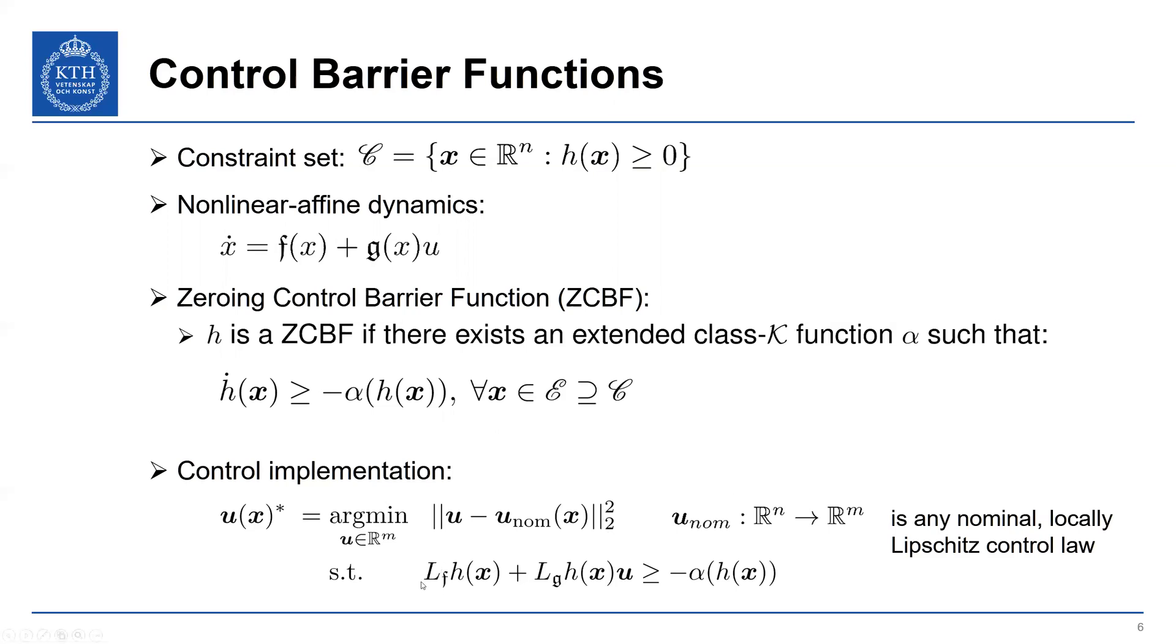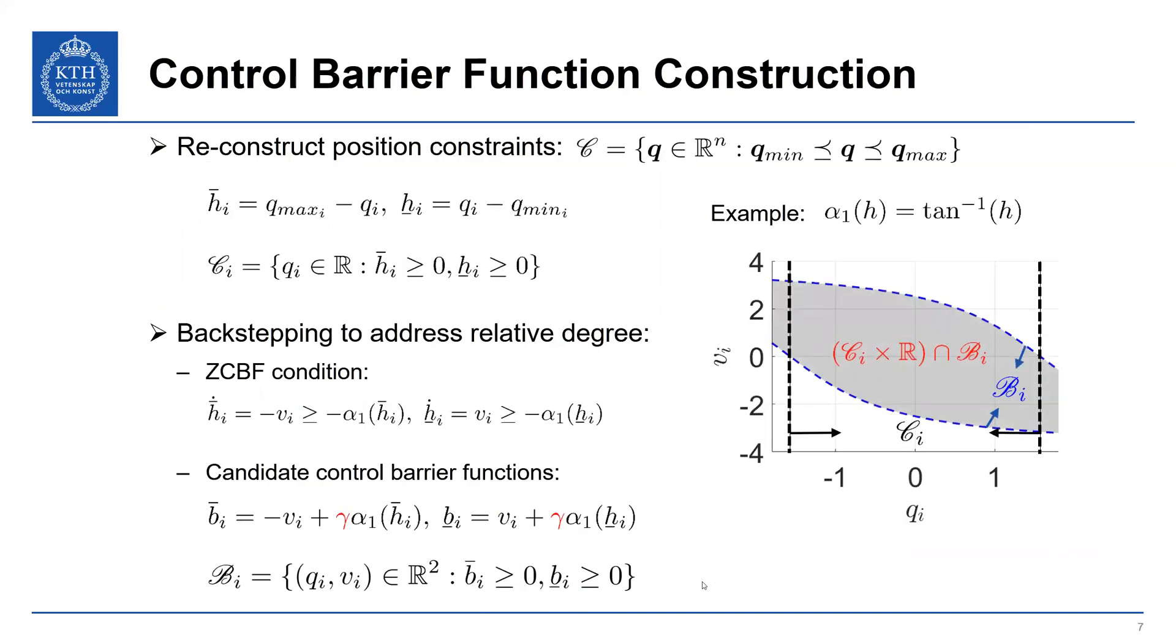But it's subject to the constraint that H dot, this Lie derivative of H with respect to the dynamics, is greater than or equal to minus alpha of H. So we're prioritizing safety or constraint satisfaction of the whole system. So what we're going to try to do is do that same approach here, but we already run into some issues.